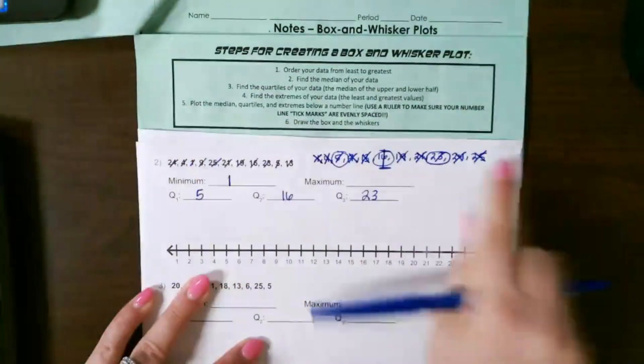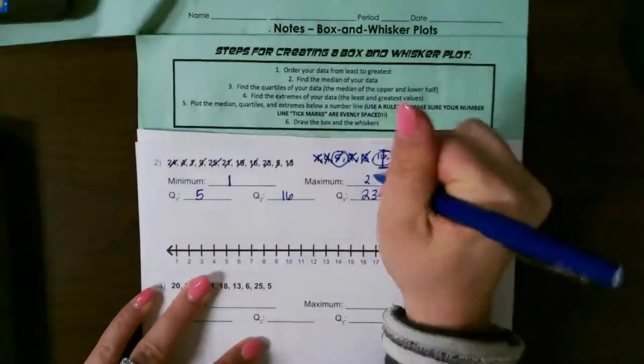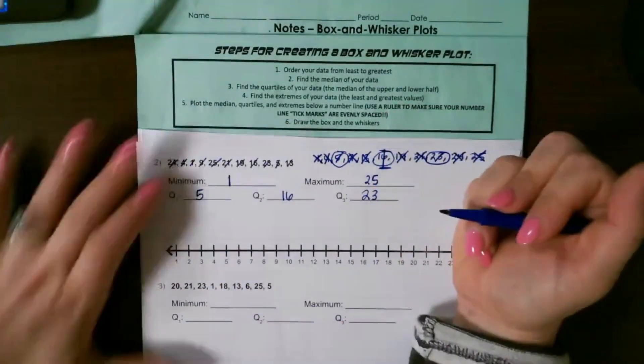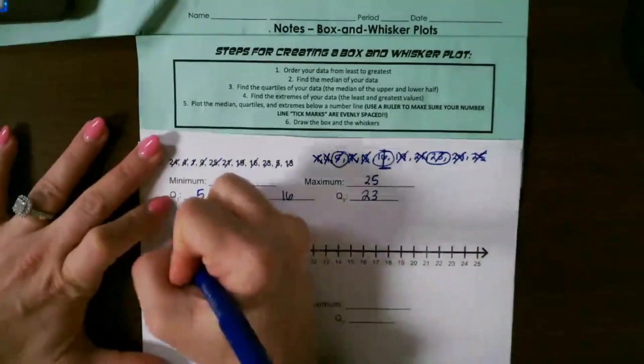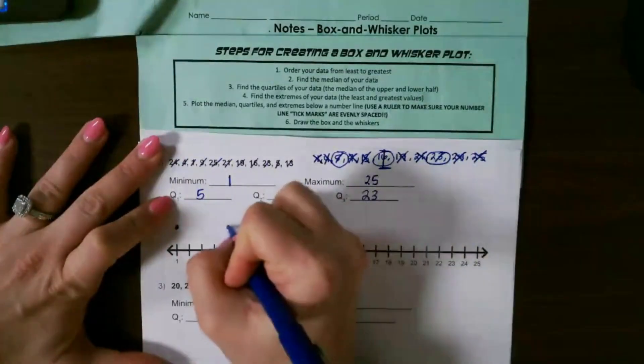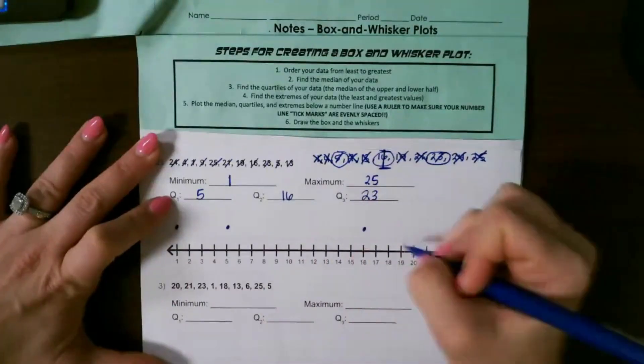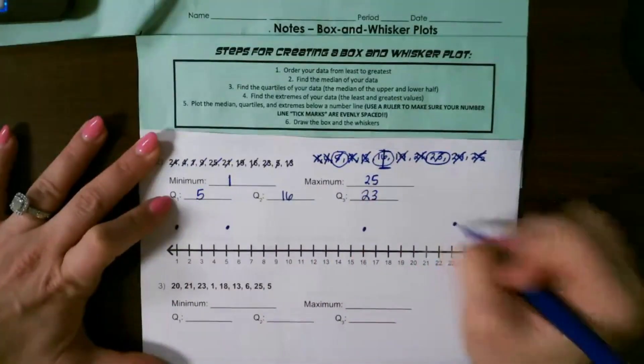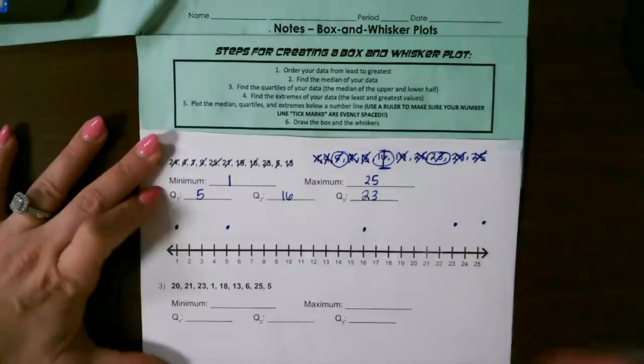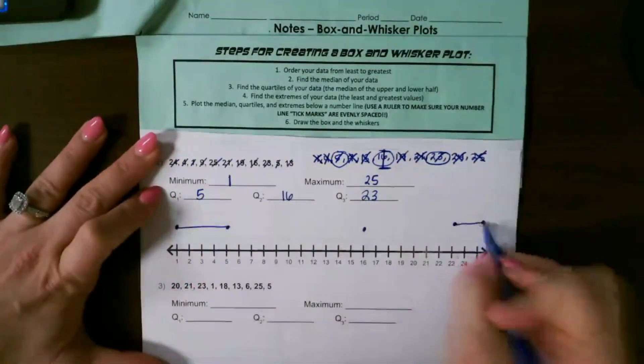Then you're going to put these five numbers on your number line. So I have 1, 5, 16, 23, and 25. The outside points are always your whiskers.